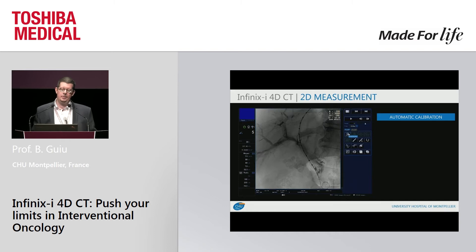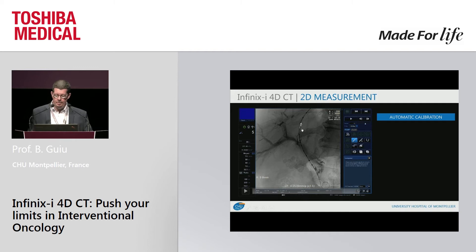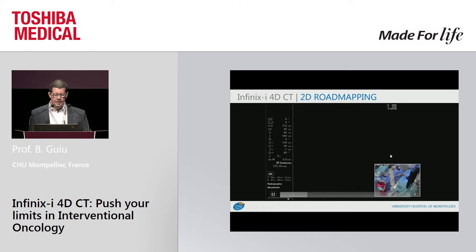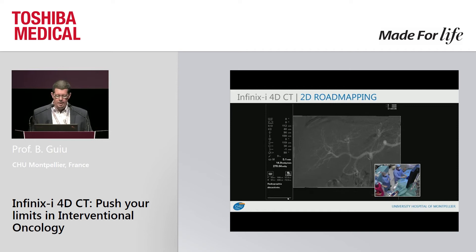A very basic tool but I was impressed by the precision of measurement. Here is an example of a TIPS procedure with a calibrated catheter — markers are one centimeter apart. Look at the measurement result without any calibration. In our small experience, each time we measured something, the precision was really high. For classical techniques, 2D road mapping is very easy: take a fluoroscopic image, take a DSA image, and use it for 2D road mapping — very classical but very efficient.